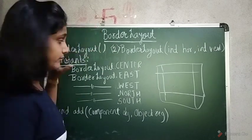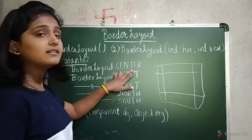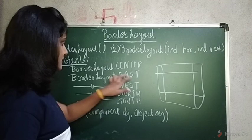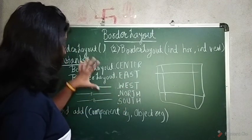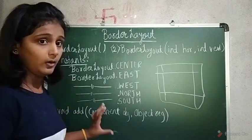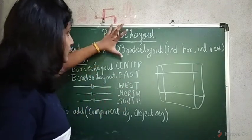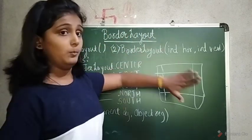Here are some of the constants of BorderLayout: BorderLayout.CENTER, BorderLayout.EAST, BorderLayout.WEST, BorderLayout.NORTH, and BorderLayout.SOUTH. These are used to specify the position when adding components.